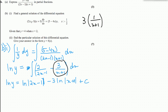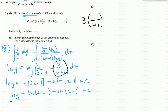For the general solution we simplify using log rules. The coefficient 3 becomes a power, so we get natural log of y equals natural log of 2x minus 1 minus natural log of x plus 1 cubed. Subtracting two log terms means dividing, giving natural log of y equals natural log of 2x minus 1 over x plus 1 cubed plus c.